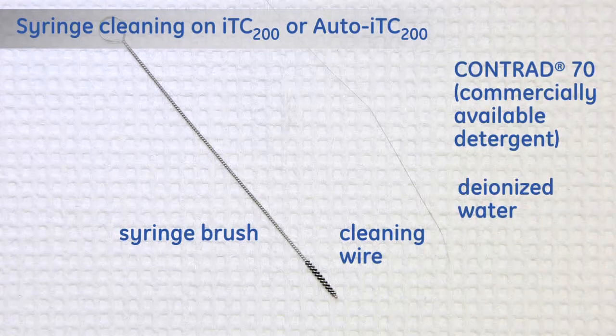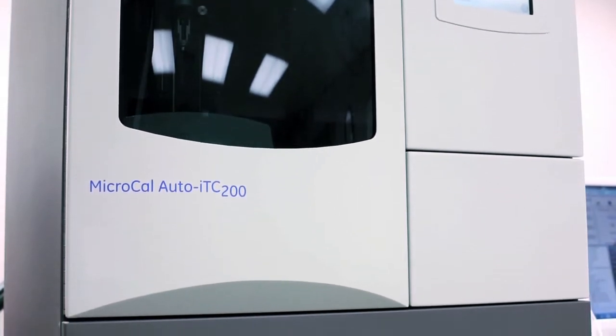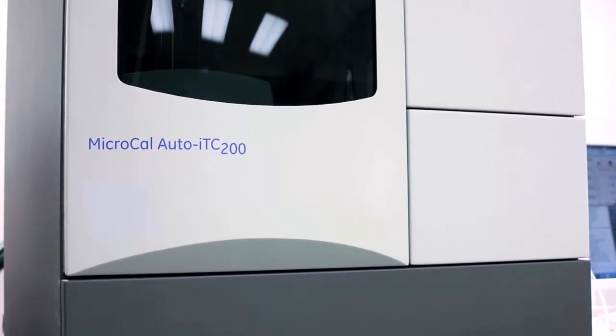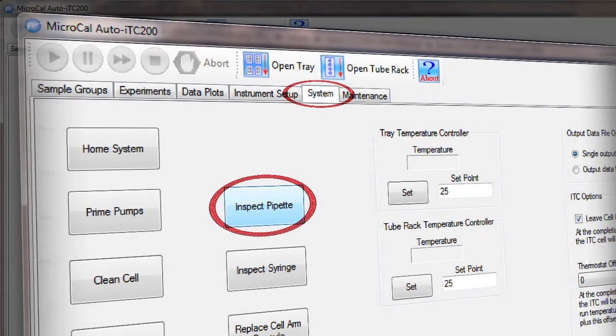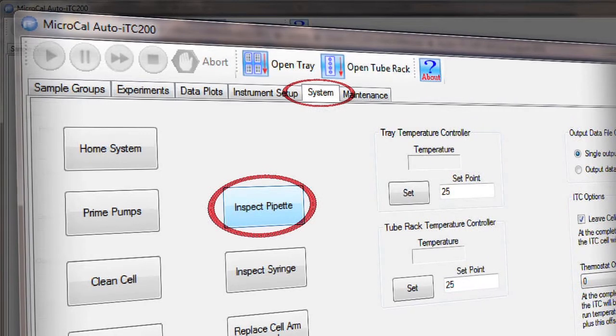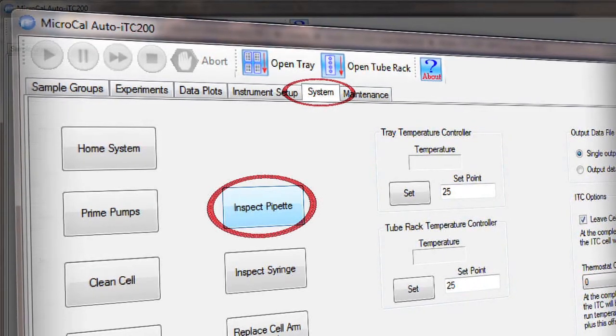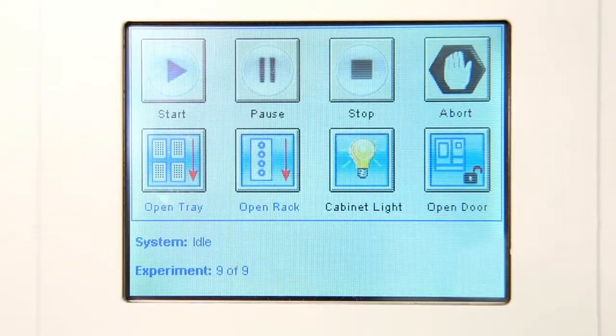To remove a syringe, you need to start with the door closed. Then click the Inspect Pipette button in the System tab of the Auto ITC 200 software. This brings the pipette arm around to the front, where it's more easily accessible. Now we can open the door.